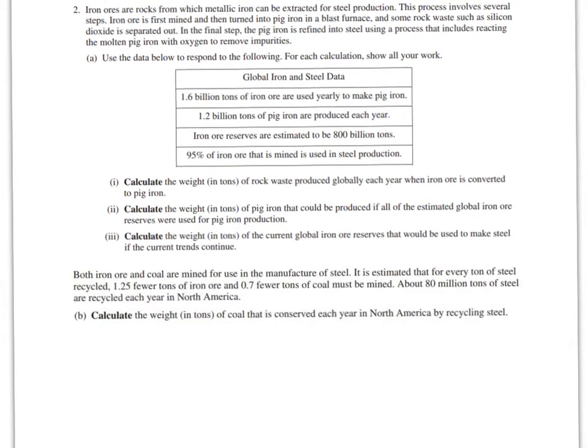So let's solve A. Use the data below to respond to the following. For each calculation, show all your work. A1, calculate the weight in tons of rock waste produced globally each year when iron ore is converted to pig iron. I want iron ore and pig iron. If I look at my chart, here's pig iron, here's iron ore, and then pig iron. I don't need the reserves yet, and I don't need steel production yet. So I'm just going to use the first two givens.